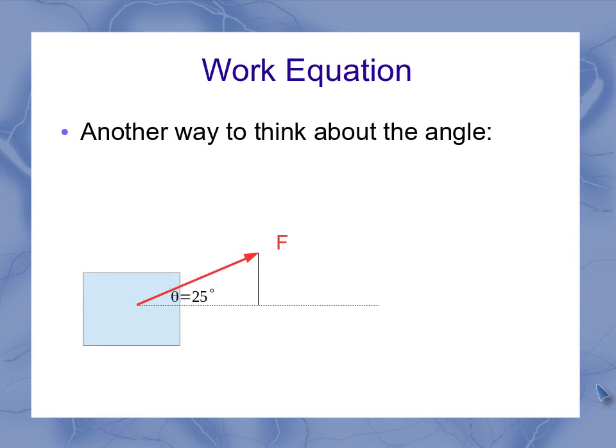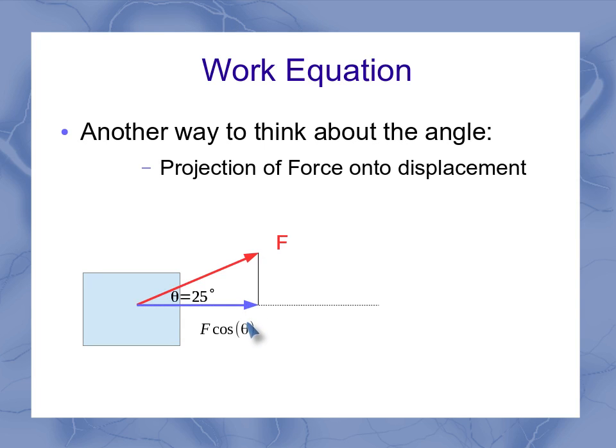There's another way for us to think about this angle down here, the angle between the force and the displacement. If I think about this force and project it down onto the displacement, I have this projection down here. And this projection is F cosine theta, because it's the adjacent side of this triangle. So that means this F cosine theta could be thought of as the parallel component of the force to the displacement.